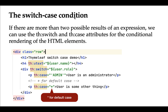Consider this code snippet here. We are using the th:switch Thymeleaf attribute to evaluate the condition user.role. If the user role is admin, then this case will execute and print 'user is administrator'. If none of the cases match, the default case will execute. In Thymeleaf, we use star (*) to denote the default case.